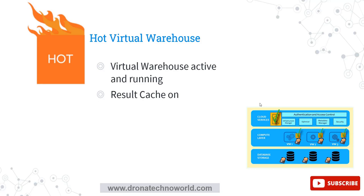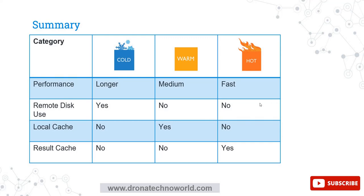In short, the summary of cold, warm, and hot virtual warehouses is as follows. Performance-wise, the cold warehouse takes a longer duration to execute a query compared to the warm and hot virtual warehouses. If you need better performance, we recommend leveraging the cloud services cache because it will return results very quickly — hence performance is very good with hot virtual warehouses. During the cold virtual warehouse state, the remote disk — that is database storage — is used to return the result. For warm and hot virtual warehouses, the remote disk is not used; rather they leverage caching from the local disk and the result cache respectively.